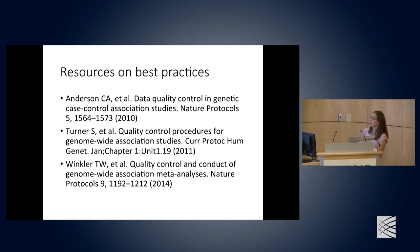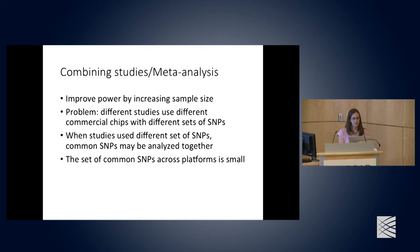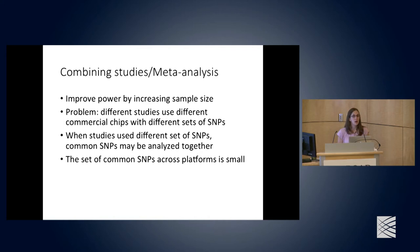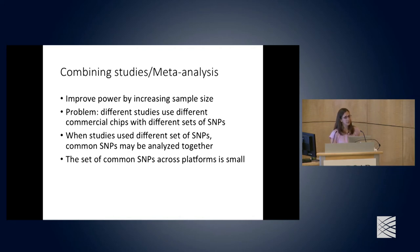There are good references on best practices for quality control of GWAS results. After QC, you may need to combine data through meta-analysis with other cohorts that have collected similar phenotypes, improving power by increasing sample size. The problem is that different studies use different commercial genotyping arrays, giving different sets of SNPs, so the set of common SNPs across platforms is typically very small.